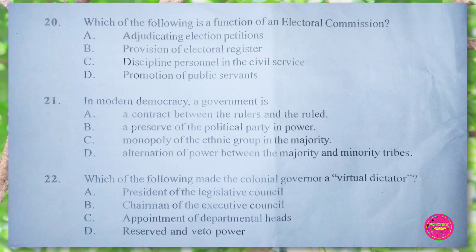Question 22. Which of the following made the colonial government a virtual dictator? A. president of the legislative council, B. chairman of the executive council, C. appointment of departmental heads, D. reserved and veto power. The correct answer is D. reserved and veto power.